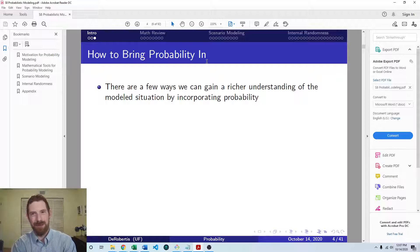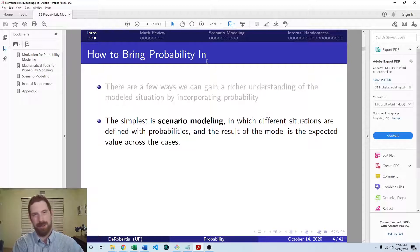So there's a few different ways that we can incorporate probability into our financial models. We started to already touch on scenario modeling, where we think about different possible situations we could end up in: recession, neutral economy, expansion economy, or whatever other different scenarios you want to think about. And we basically take all the inputs of the model and think about what would be the values of these inputs in each of these situations or scenarios.